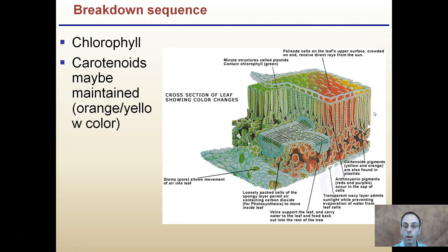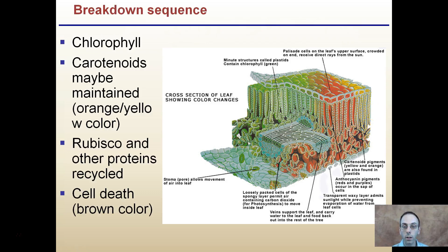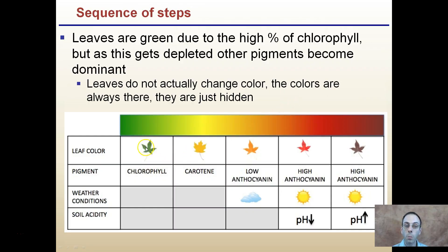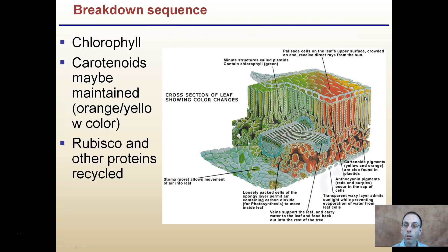At the cellular level, chlorophyll is of course the most dominant pigment, and then it gets broken down. The carotenoids may be maintained as an orange or yellow color. Rubisco and other proteins are recycled. It's important to realize this transition of colors occurs because the plant is trying to conserve as much energy as possible — breaking down the chlorophyll first, then the carotene, then the anthocyanin. It's trying to conserve and store this energy to be ready for next spring.